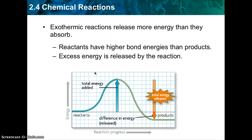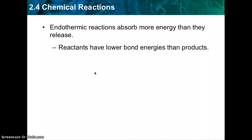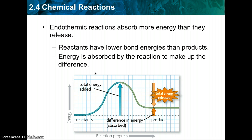An exothermic chemical reaction releases more energy than it absorbs. The last type is an endothermic reaction, which is a chemical reaction that absorbs more energy than it releases. Reactants have a lower bond energy than the products, and energy is absorbed by the reaction to make up the difference. The products in an endothermic reaction have a higher bond energy than the reactants, and the difference in bond energy is absorbed from the surroundings.